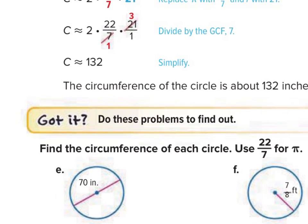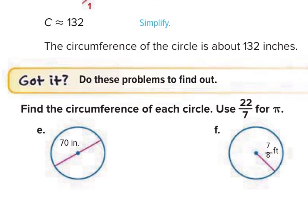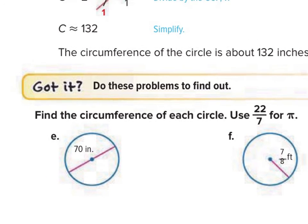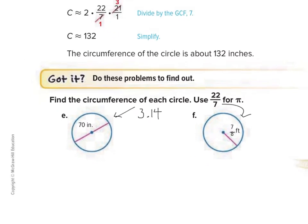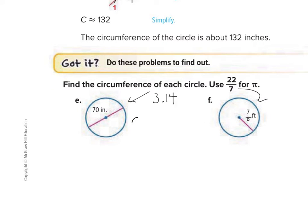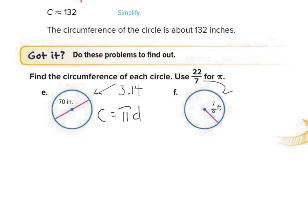Now it's time to practice. Use 3.14 on problem E, and use 22 over 7 on problem F. Stop the video and practice finding the circumference using the formula pi times diameter for the first problem. For problem F, you'll probably want to use 2 times pi times radius since they gave you the radius. Stop the video and work these two out, and then we'll go over them together.